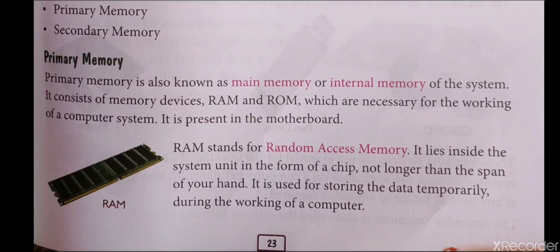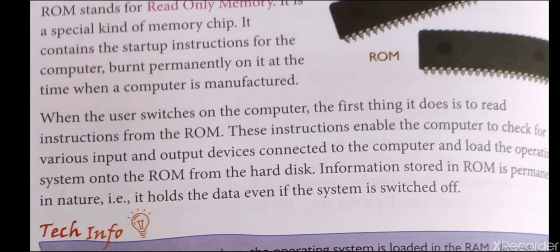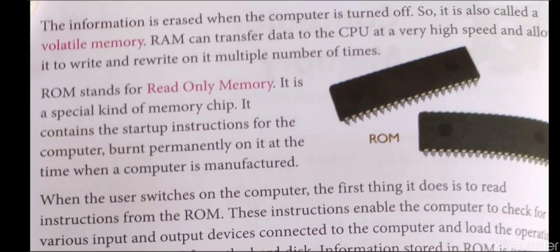RAM is used for storing data temporarily during the working of a computer — not permanently. The information is erased when the computer is turned off. So it is called a volatile memory. RAM में data temporary store होता है, और जब computer बंद होता है तब RAM की information erase हो जाती है।